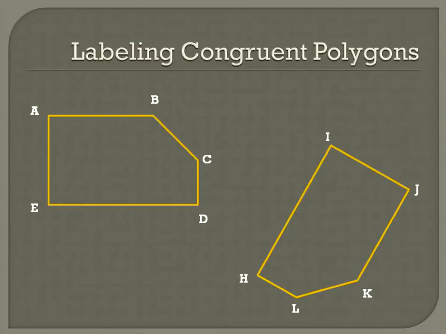I'm going to talk a little bit now about labeling congruent polygons because sometimes we're given polygons that are labeled like this. We'll call this one here A, B, C, D, E. And just because this one has the letters H, I, J, K, L does not mean that we can say A, B, C, D, E is congruent with H, I, J, K, L. In fact, that would be incorrect.